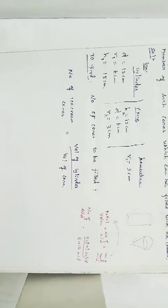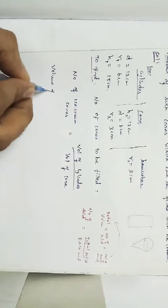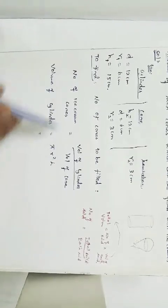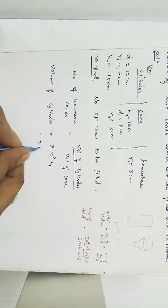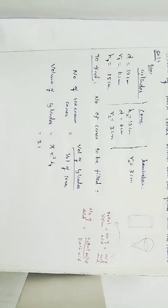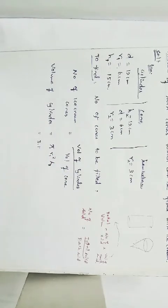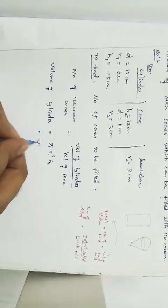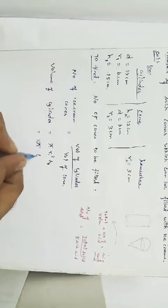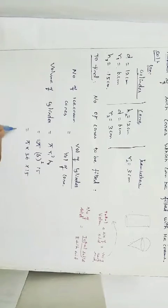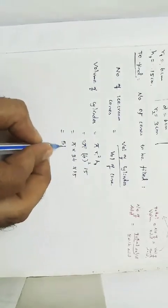First, let's find the volume of the cylinder. Volume of cylinder = πr₁²h₁. Since both volumes will have π, the π values will cancel later, so we keep π as it is. r₁ = 6 cm, so 6² = 36; h₁ = 15. Volume of cylinder = 36 × 15 × π = 540π cm³.